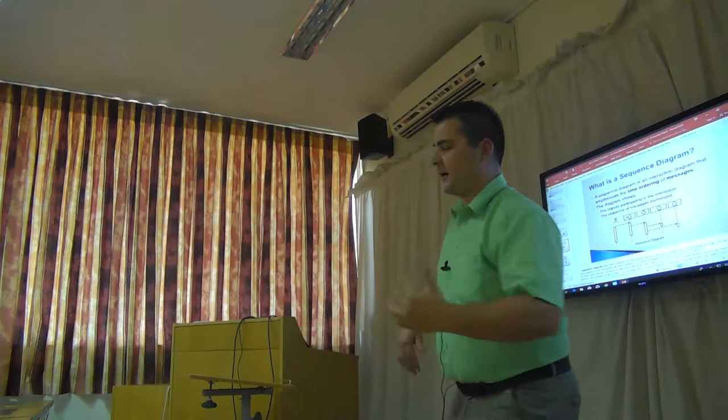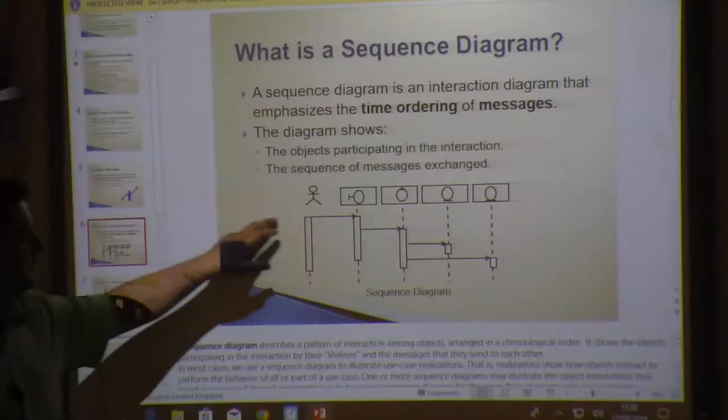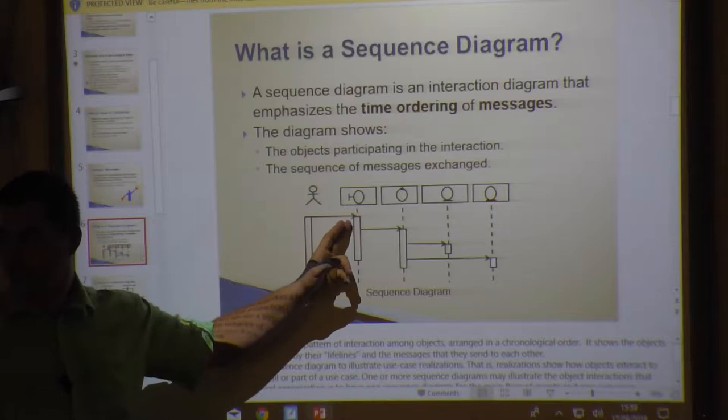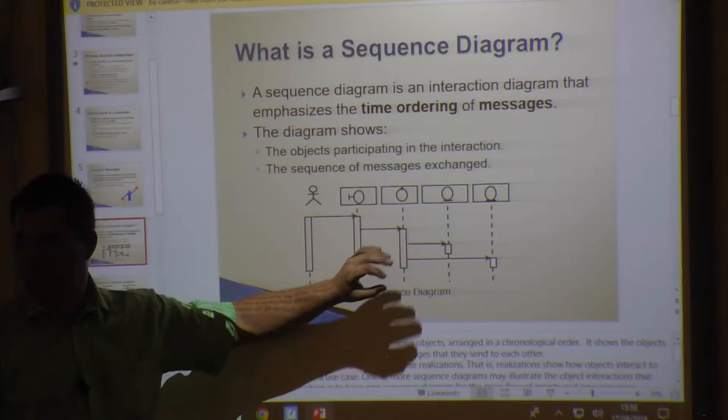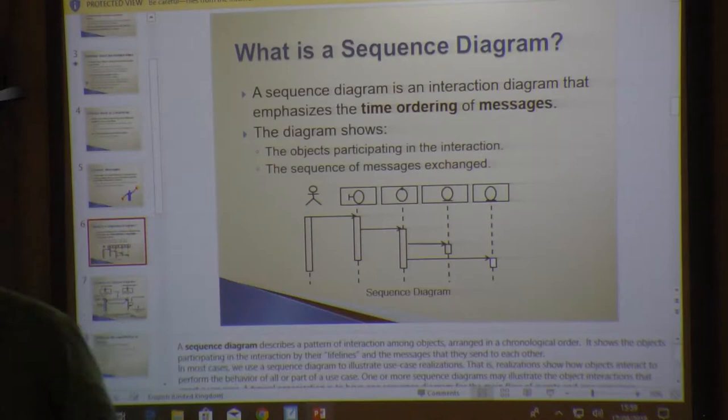I have my actor here, I have my boundary class, control class, some entities. But who's starting the use case? Normally it's the actor. What is the actor doing? He might be clicking or interacting with the boundary class, and then from there we need to go and ask the controller to tell okay, he has now done this, what needs to happen next?